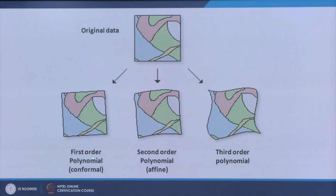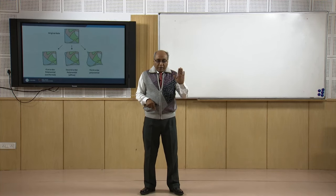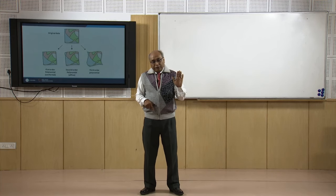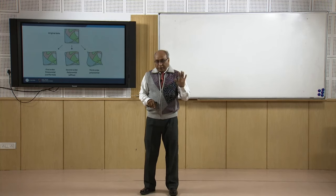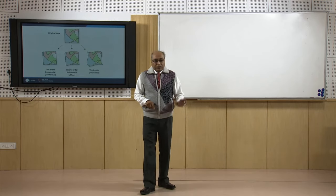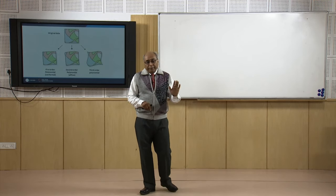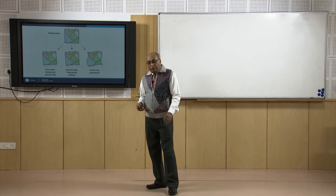Regarding which polynomial order to choose: the first-order polynomial, also called a conformal polynomial, is required when transforming simply from geometric domain to geographic domain — without any change in scale, rotation, or removal of earth curvature effects. For a scanned map that just needs coordinates assigned, first-order polynomial is more than sufficient.